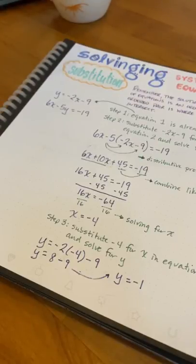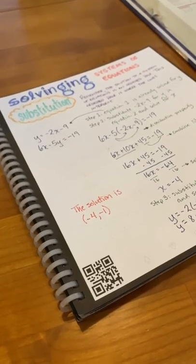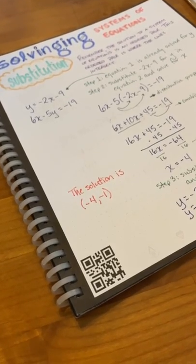And when we do that, we get y equals negative 1. Therefore, the solution to this system of equations is the ordered pair.